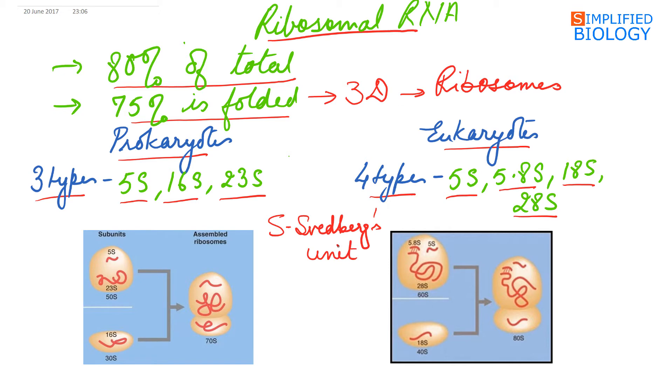Now in prokaryotes, the 16S ribosomal RNA is associated with the 30S ribosomal subunit, forming together the 70S ribosome. While in eukaryotes, the 18S ribosomal RNA is associated with the 40S subunit, while the 5S, 5.8S, and 28S is associated with the 60S subunit of ribosome, together forming the 80S ribosome.